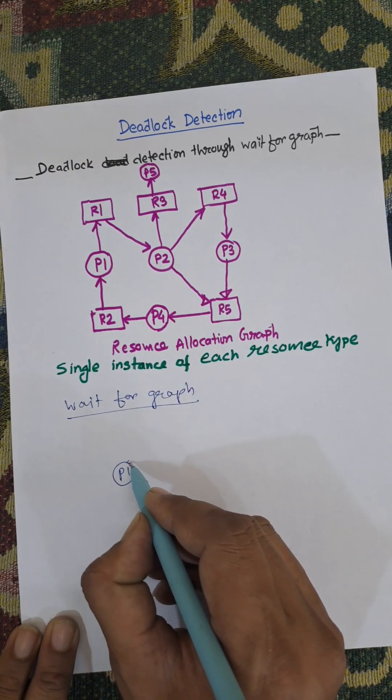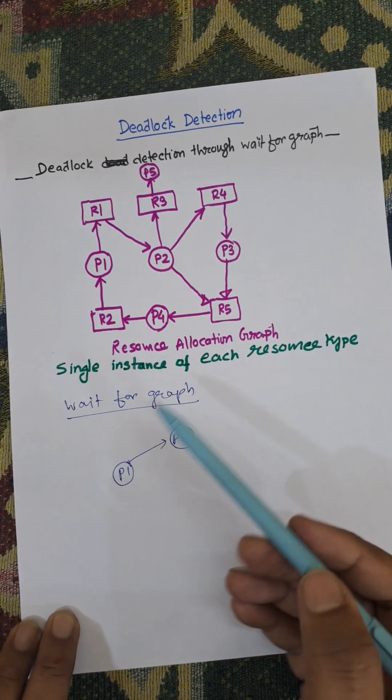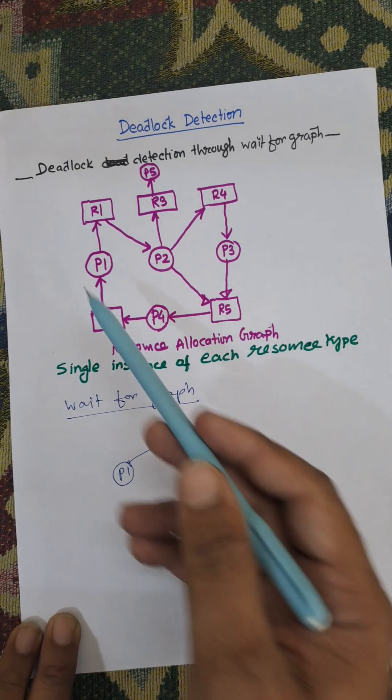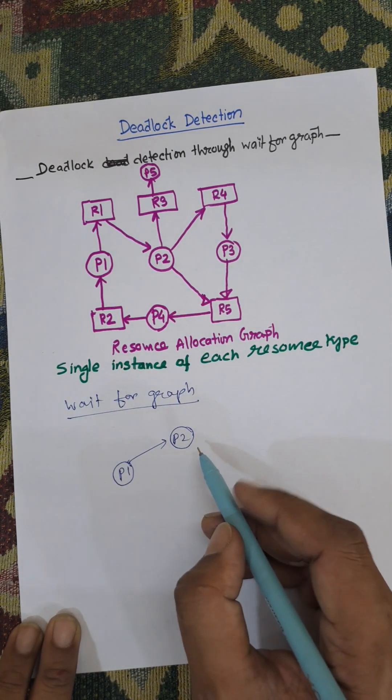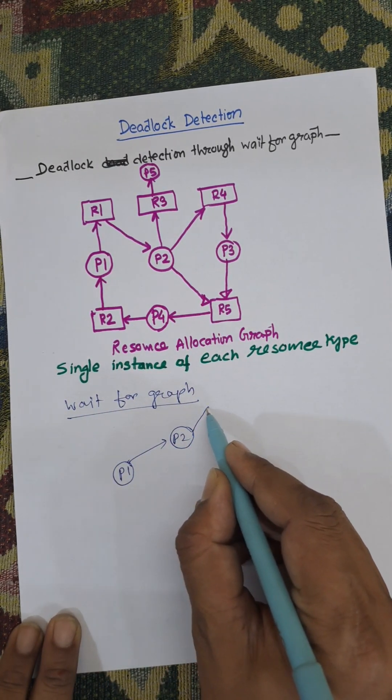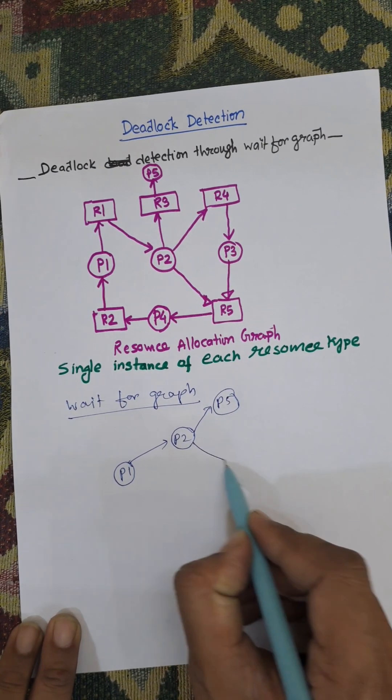Then we are collapsing all the resource edges, all the resources from the graph. From P2 it moves to P5 or to P3.